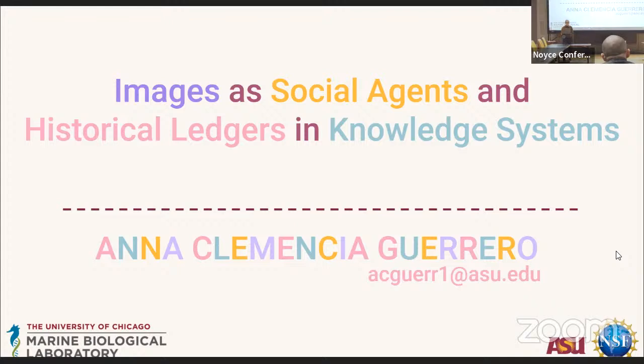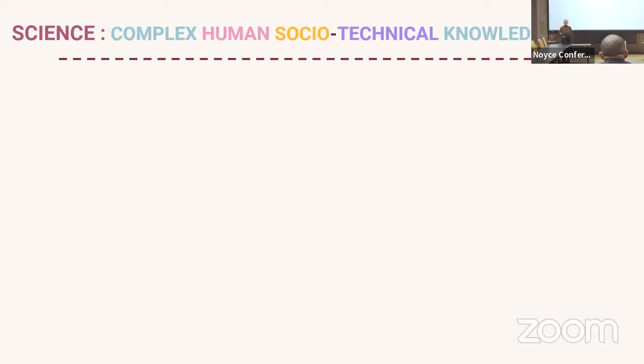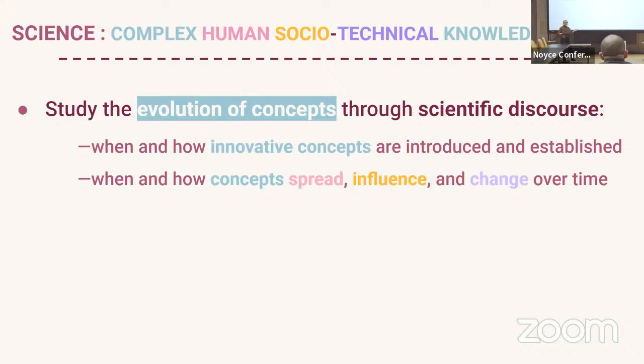Thank you everyone for coming today. I'm sure you're all aware that there are many ways to study and model complex knowledge systems. Today the knowledge system I want to talk about is science — particularly science as something that is human and socio-technical, and that makes knowledge about physical entities.